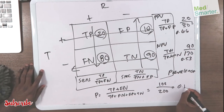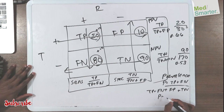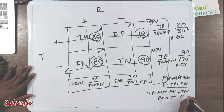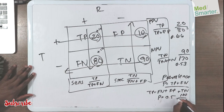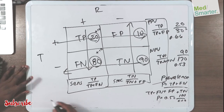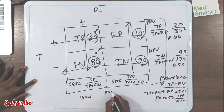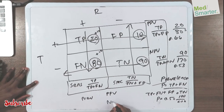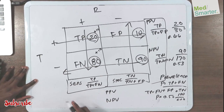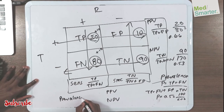So your prevalence is 0.5. We said our prevalence is 0.5 — that was that 100 over 200 equation that we just did. But how does prevalence relate to your positive predictive value and your negative predictive value? Let's find that out, because that will definitely be asked.